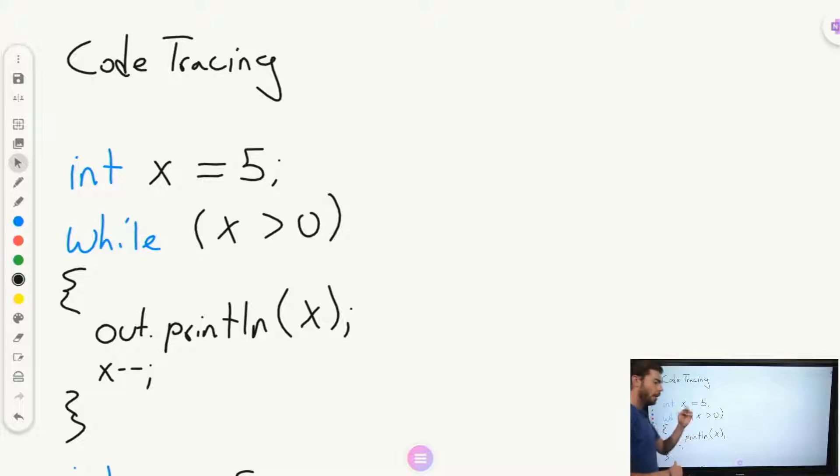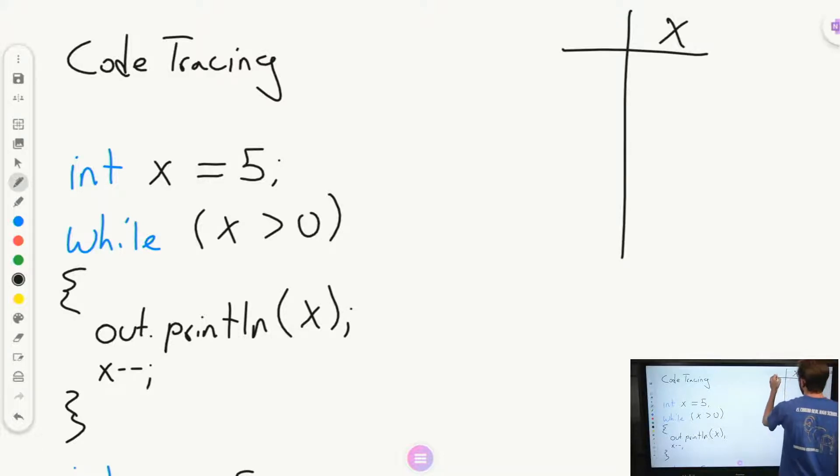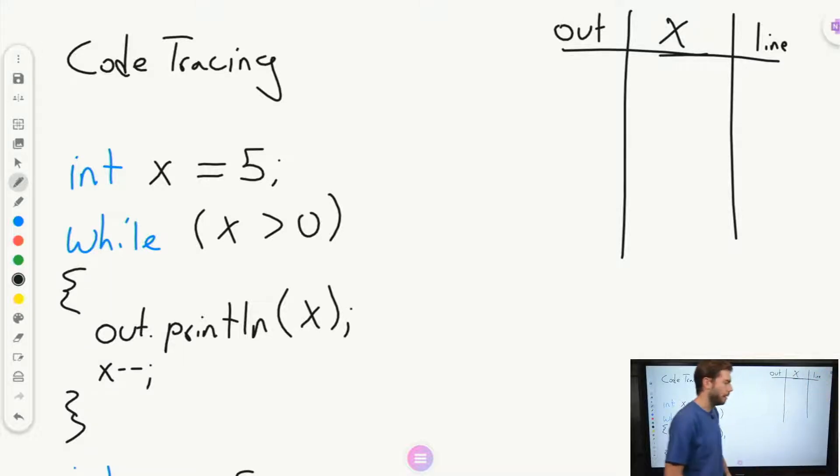Take a moment and create yourself a test table or a trace table here. So we're going to have x and our output. And for some people, they also like to use our line number in another column. So take a moment, pause the video, and see what the output is, what the last output of this program will be.